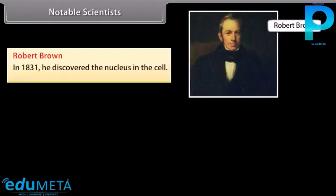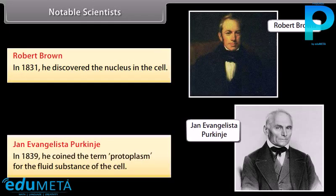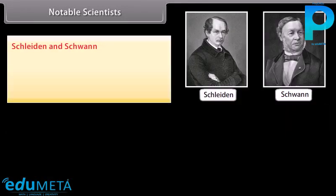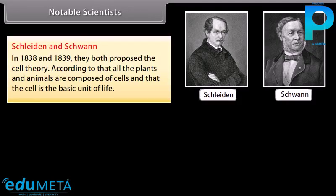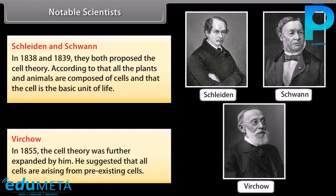Notable scientists: Robert Brown in 1831 discovered the nucleus in the cell. Jan Evangelista Purkinje in 1839 coined the term 'protoplasm' for the fluid substance of the cell. Schleiden and Schwann in 1838 and 1839 proposed the cell theory, stating that all plants and animals are composed of cells and that the cell is the basic unit of life. Virchow in 1855 further expanded the theory, suggesting that all cells arise from pre-existing cells.